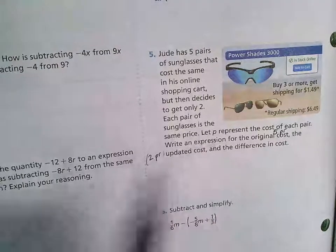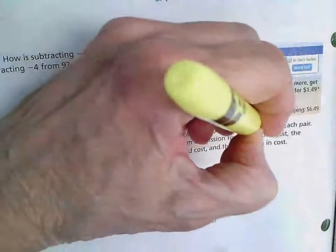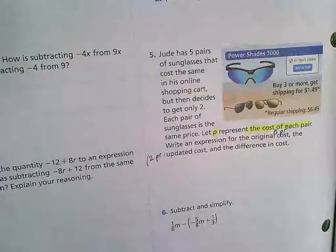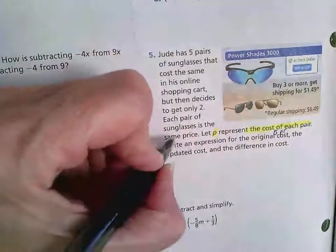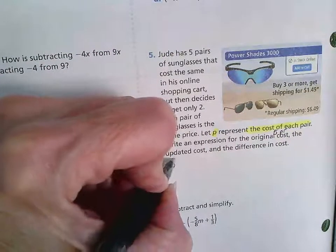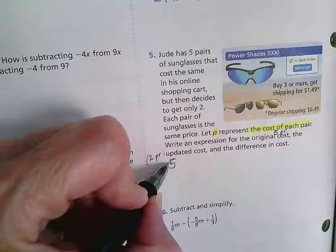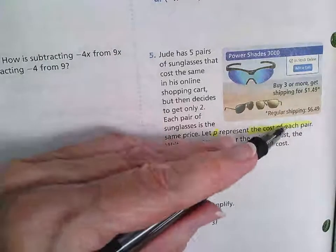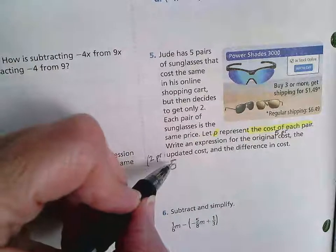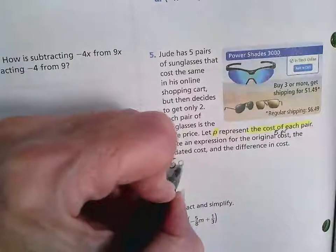So they have told us that they want P to represent the cost of each pair. So first, let's talk about his initial idea. First, he was going to buy five pairs of sunglasses. So if we took those five pairs and we multiplied them by the cost of each pair, we would find how much those five pairs were going to cost. They don't tell us the cost, they just say let P represent the cost.